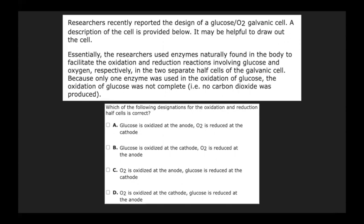Practice question: Researchers recently reported the design of a glucose/oxygen galvanic cell. They use enzymes naturally found in the body to facilitate the oxidation and reduction reactions involving glucose and oxygen respectively. Because only one enzyme was used in the oxidation of glucose, the oxidation was not complete — no CO2 was produced. Which of the following designations for the oxidation and reduction half-cell is correct? This is pretty much just asking you to have that chart down pat. It's a galvanic cell, and you just need to know which gets oxidized and which gets reduced and where.